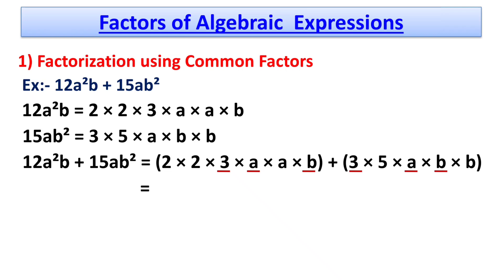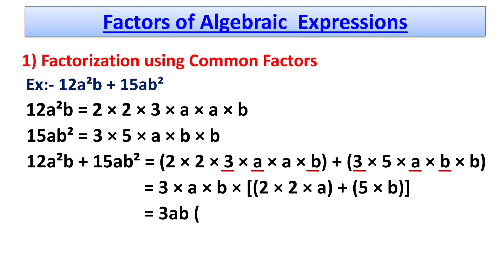So we write it out of the bracket. We get 3 × a × b multiplied by, in the first bracket 2 × 2 × a, plus in the second bracket 5 × b. Thus, 3ab(4a + 5b).